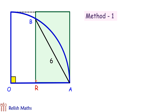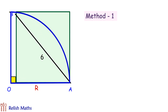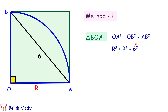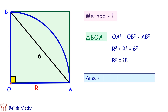How about if we expand it a bit more to cover the full quadrant? In this figure, the question and its language still remain the same — we have to find the area of the rectangle, but here it's easier to calculate. In triangle OBA, applying Pythagoras theorem and putting OA and OB as R, we get R² = 18. R² in this case represents the area of the rectangle, and thus the area of the rectangle is 18 cm².